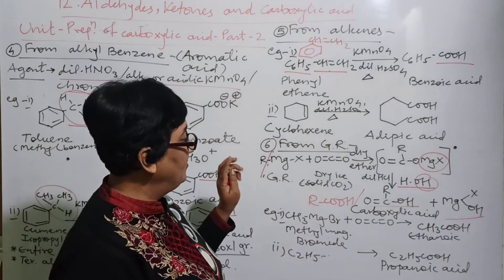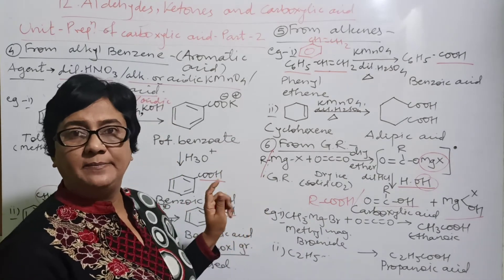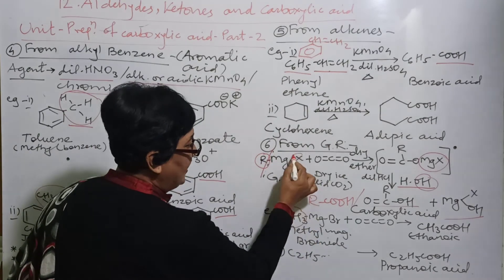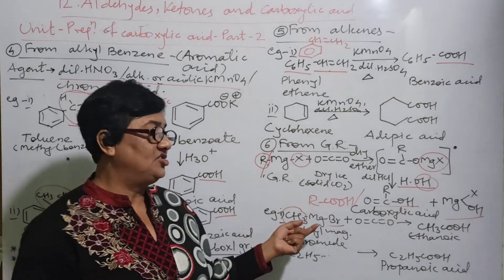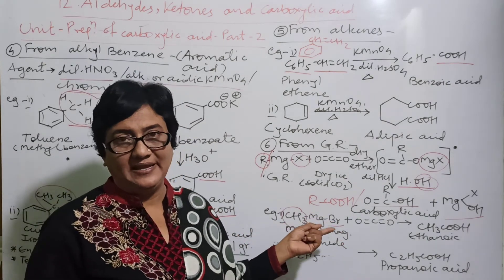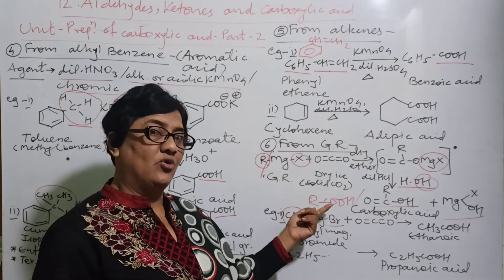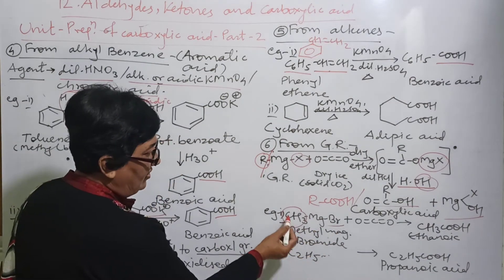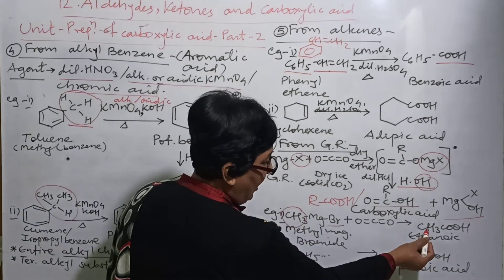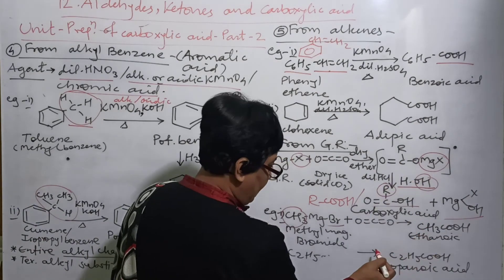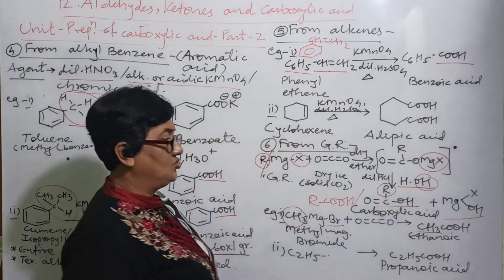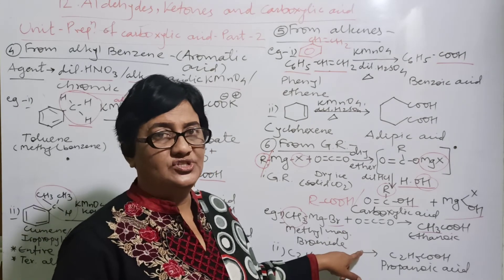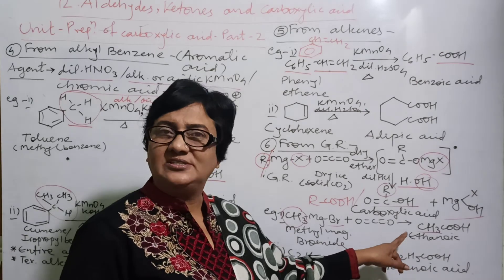Now from this general reaction, any specific example can be written. How? This R is replaced by CH3 and this X is replaced by Br. Here in examination Br, Cl, I - any example can be given. So you can write according to that. This is methyl magnesium bromide. When R is replaced by methyl group, finally in R place here CH3 comes.